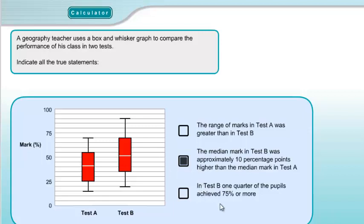Statement 3: In test B, one quarter of pupils achieved 75% or more. We're interested in the upper quartile — the top of the box — which represents the top quarter of the class. The upper quartile for test B is only at 70%, not 75%. So that's a false statement. Had they changed it to 70%, it would be true.